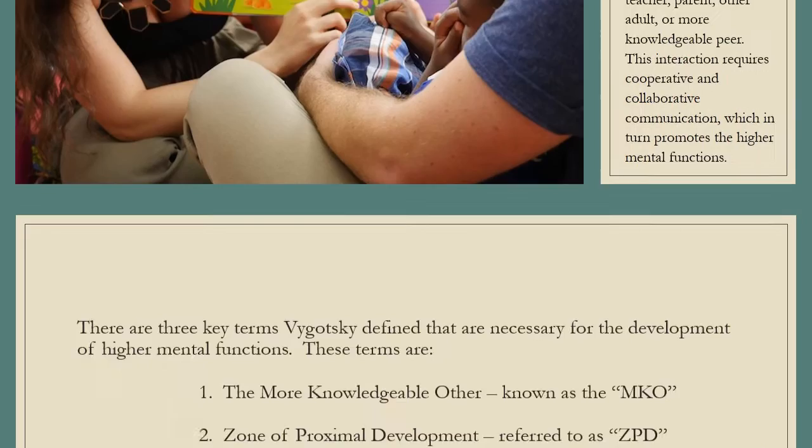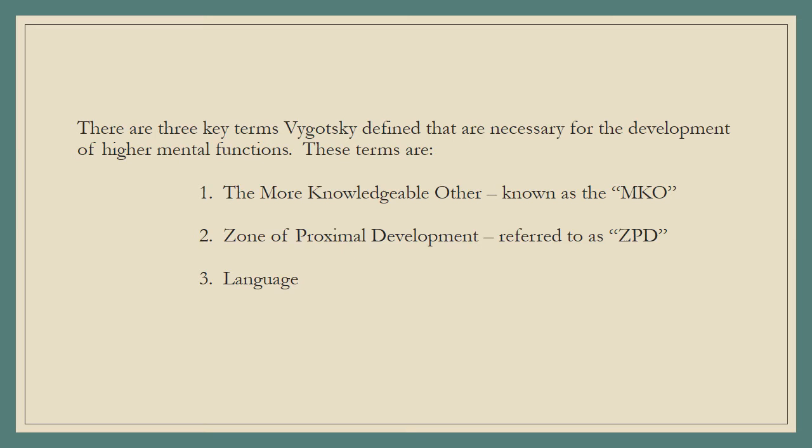There are three key terms Vygotsky defined that are necessary for the development of higher mental functions. These terms are the more knowledgeable other, known as the MKO, zone of proximal development, referred to as ZPD, and language.